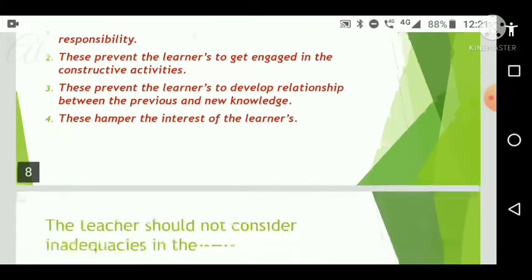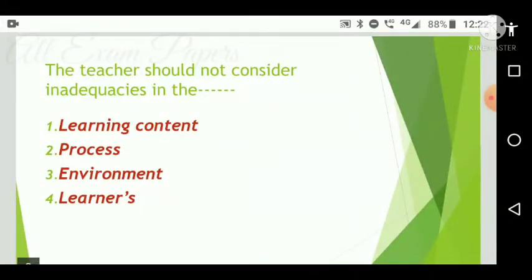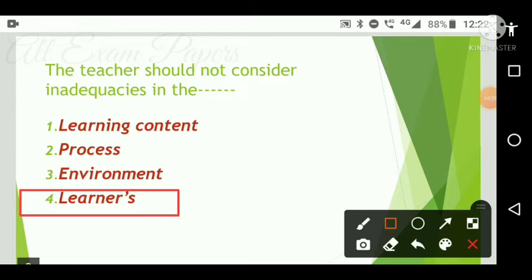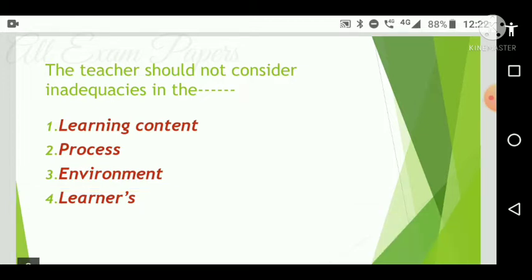Next question: The teacher should not consider inadequacy in the dash. Options are: learning content, process, environment, and learners. The correct answer is option four — learners.